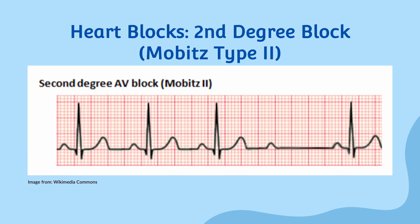Next, we'll talk about second degree heart block Mobitz type 2. Mobitz type 2 is characterized by a consistent PR interval, which is lengthened, followed by a dropped ventricular beat. On an EKG, it appears to follow a regular rhythm with dropped beats. This type of heart block is considered more serious and may progress to third degree heart block. The underlying etiology can be related to myocardial infarction, acute myocarditis, and certain medications.